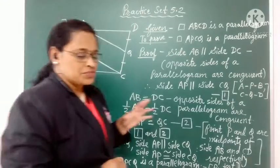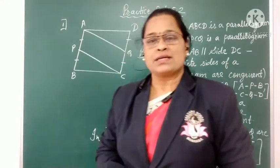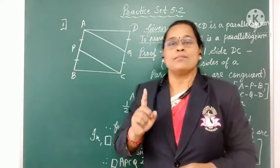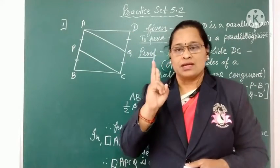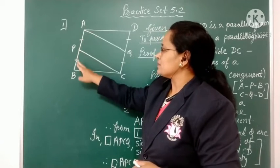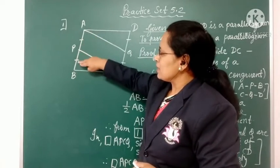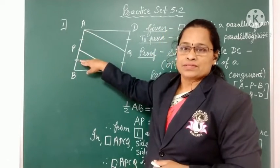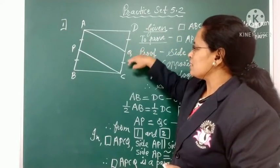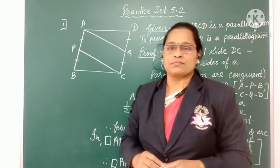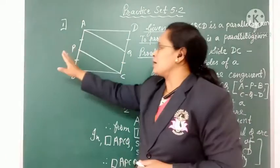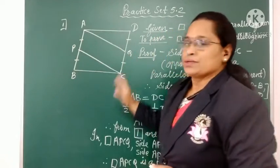We will start with the given information. Quadrilateral ABCD is a parallelogram. P is the midpoint of AB, so AP and PB are equal to each other. Q is the midpoint of DC, so DQ and QC are equal to each other. And opposite sides of the parallelogram are congruent, so AB is congruent to DC.